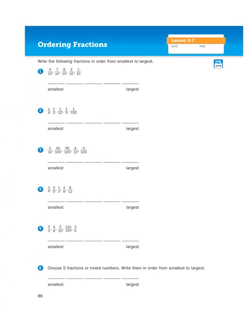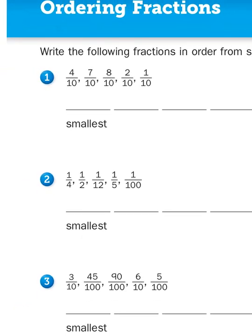It says, write the following fractions in order from smallest to largest. Now number one is pretty straightforward. We have five fractions that all have the same denominator. That means they have like denominators. So that means we are just counting pieces on the top, or in other words, the numerator.